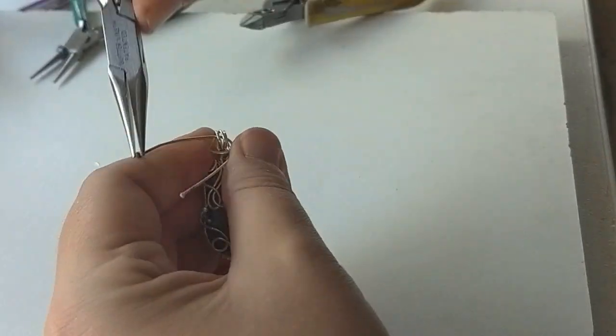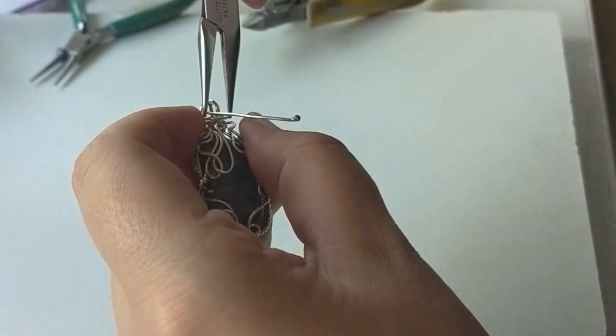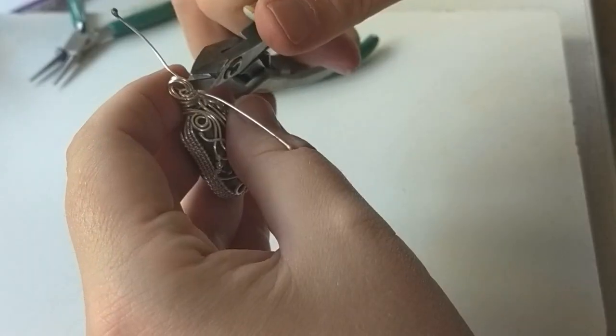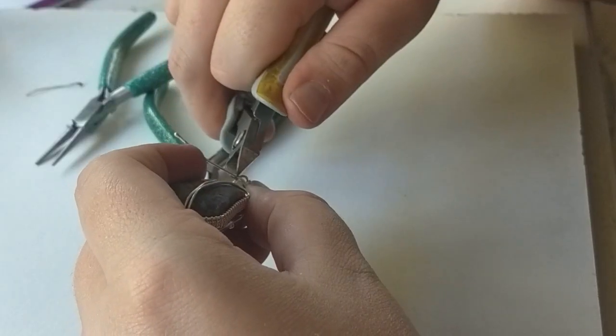Use the round nose pliers to bend the wires back and around to form the bail. And then you want to cut and tuck the ends.